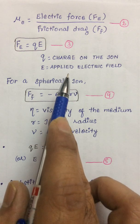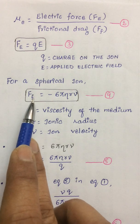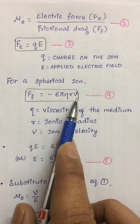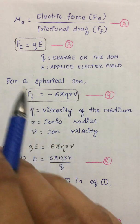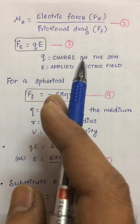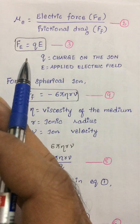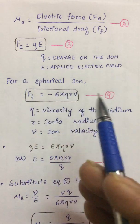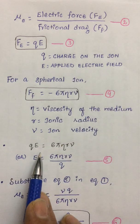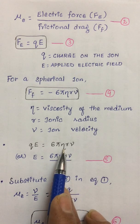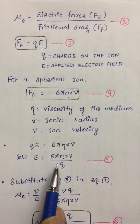Ions usually assume a spherical shape, as it is the minimum space any species can acquire. For a spherical ion, the frictional drag is given by Ff = −6πηrν, where η is the viscosity of the medium, r is the ionic radius, and ν is the ion velocity. The ion tries to move toward the cathode or anode, but frictional drag opposes this movement. When the frictional drag equals the electric force, we have qE = 6πηrν.